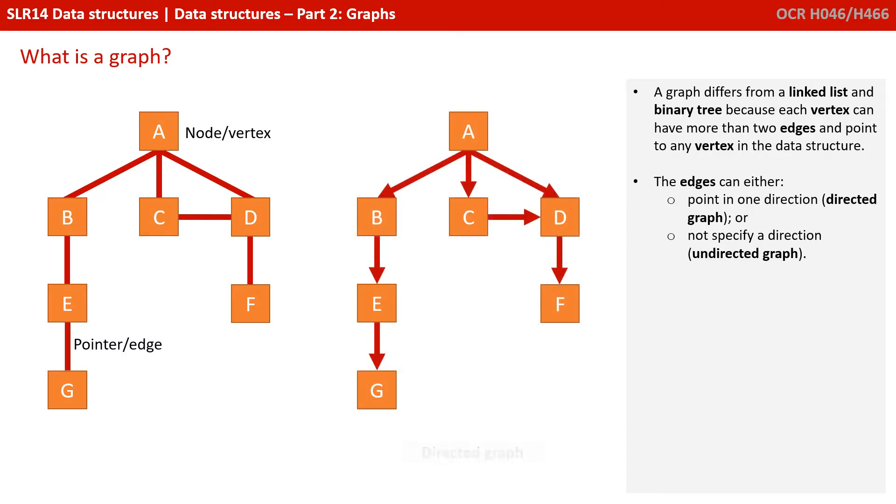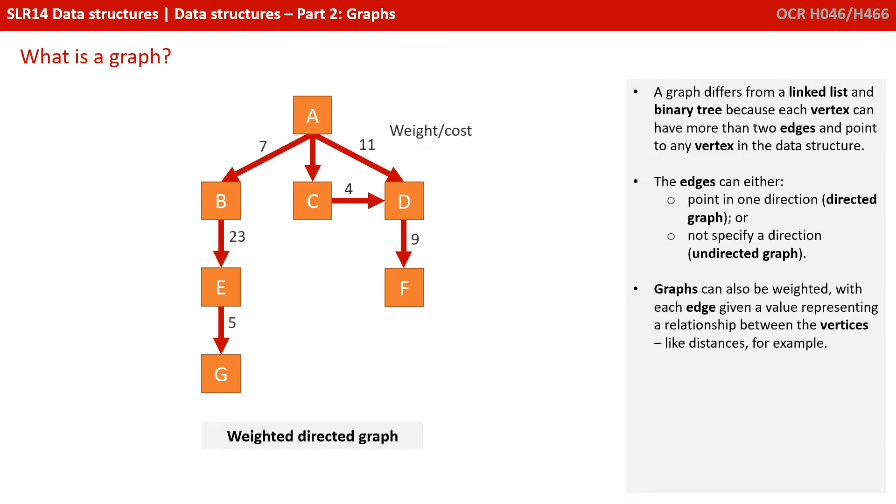The edge can either point in one direction or not specify a direction, so this is an undirected graph. Graphs can also be weighted with each edge given a value representing a relationship between the vertices, like distances for example.